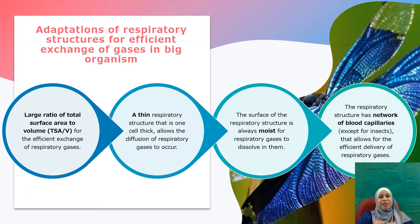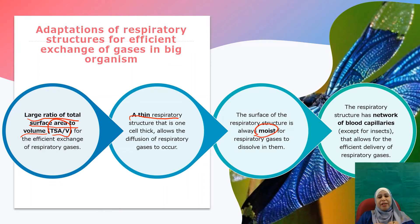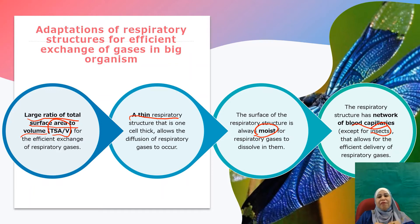Below are the adaptations of respiratory structures to ensure efficient gaseous exchange in large organisms. The first adaptation is a large ratio of total surface area to volume (TSA/V). The second adaptation is a thin respiratory structure to allow respiratory gases to diffuse easily. The third adaptation is for respiratory gases to dissolve in the respiratory surface. The fourth adaptation is a network of blood capillaries, except for insects, to allow efficient delivery of respiratory gases.